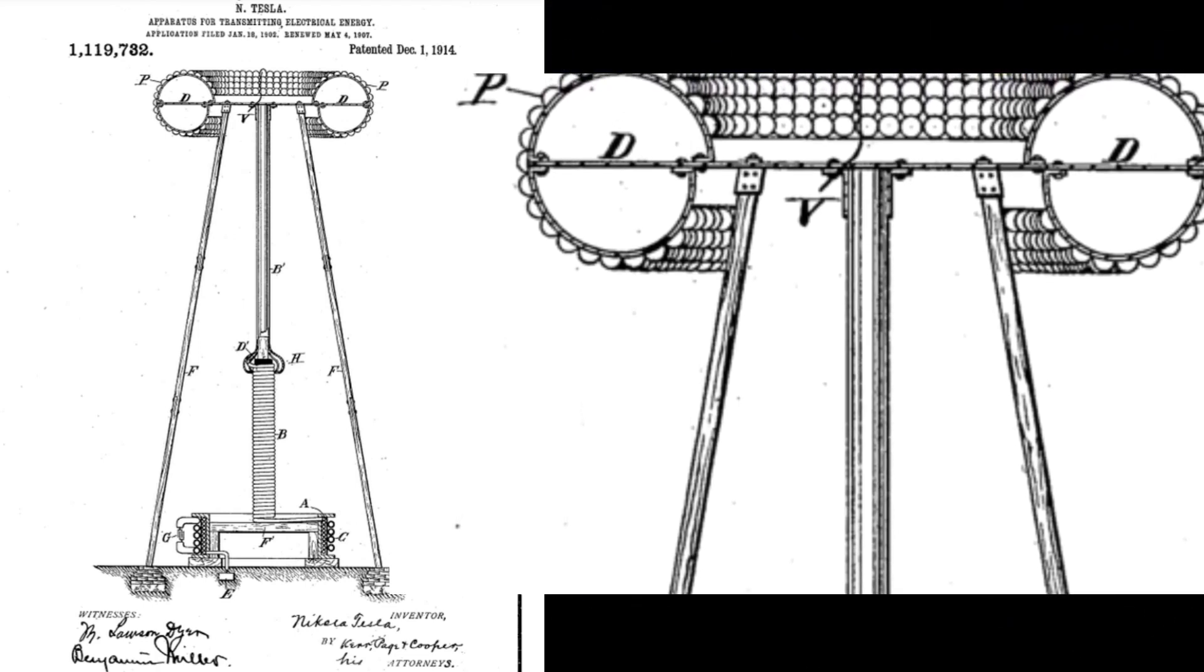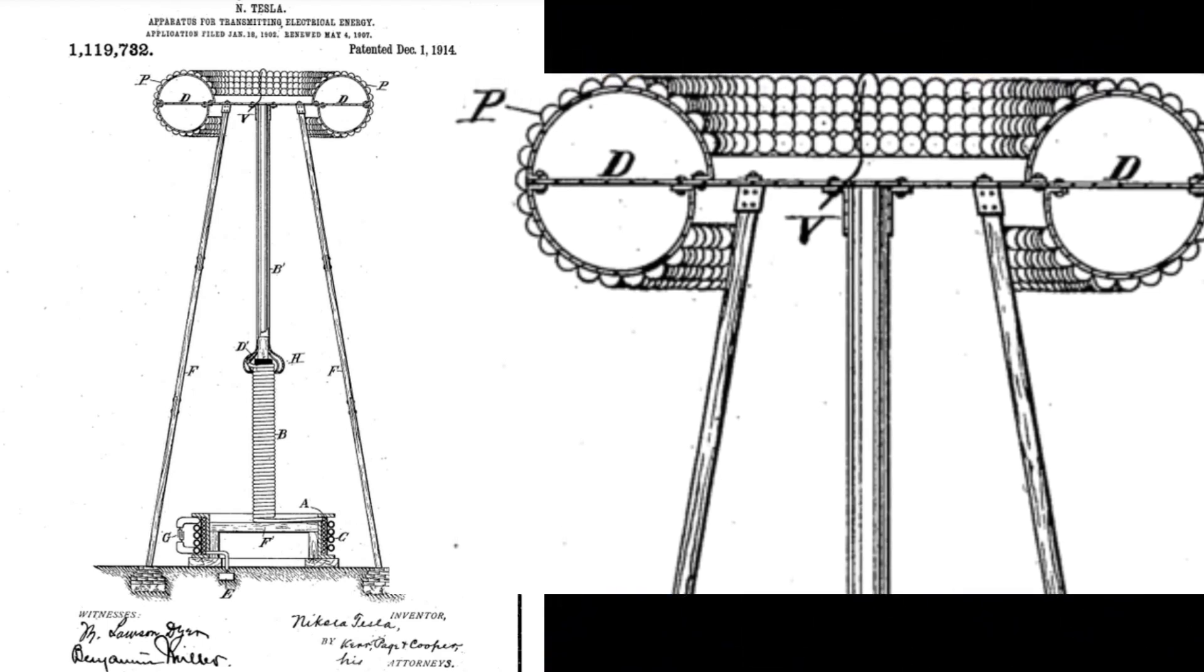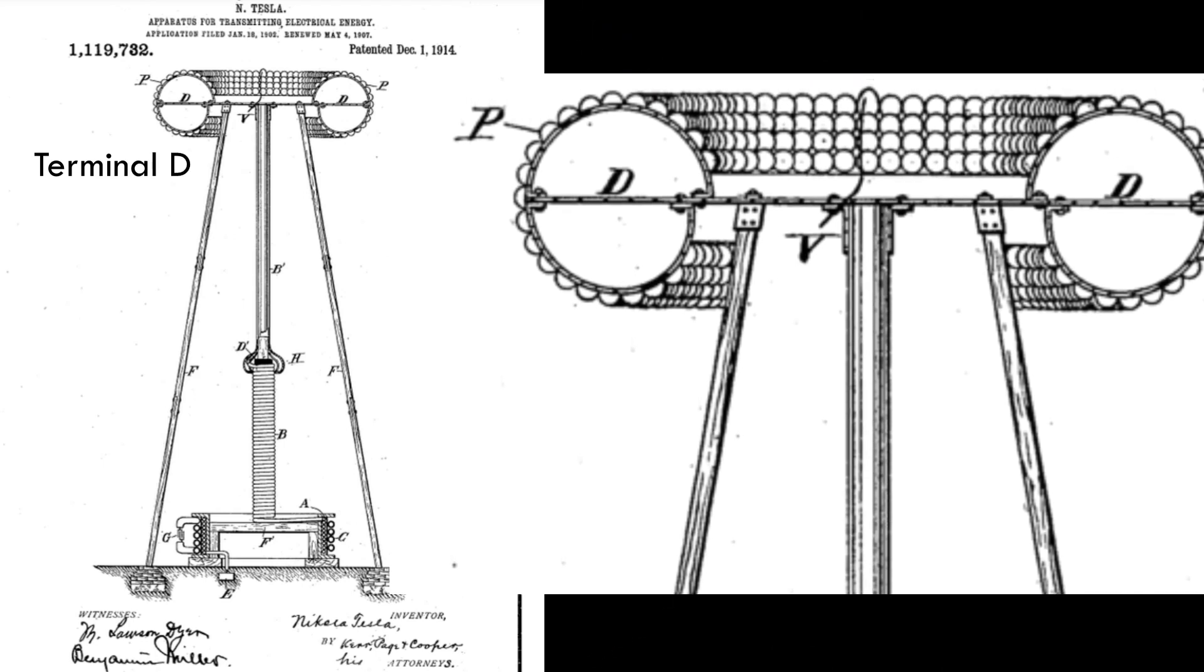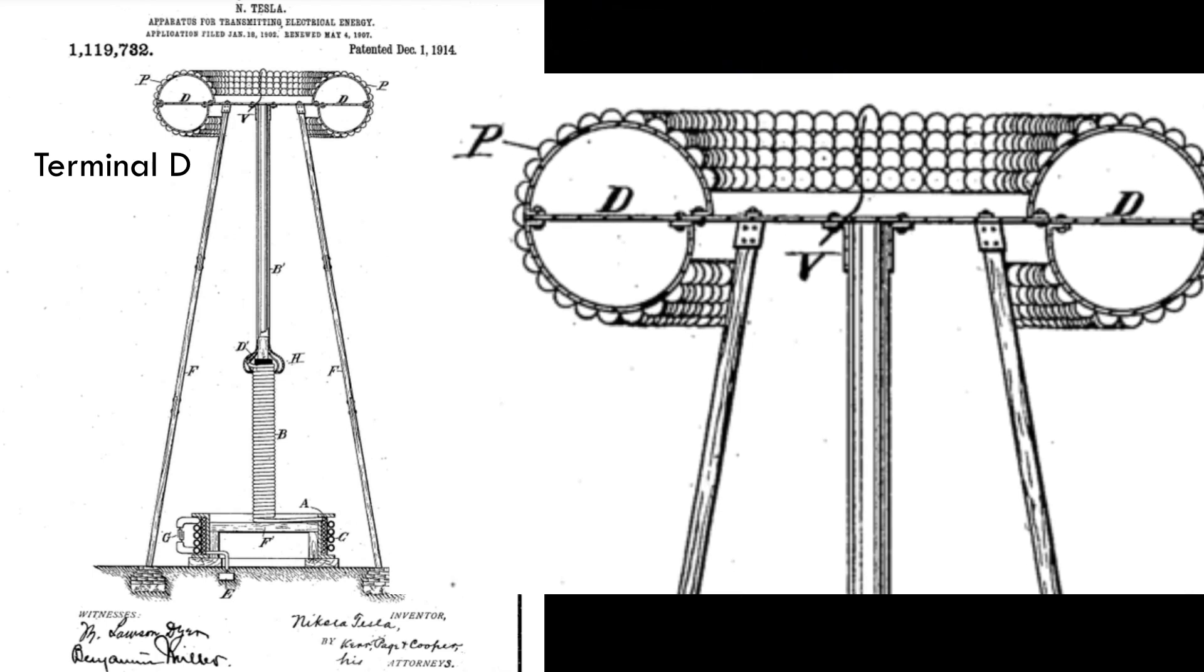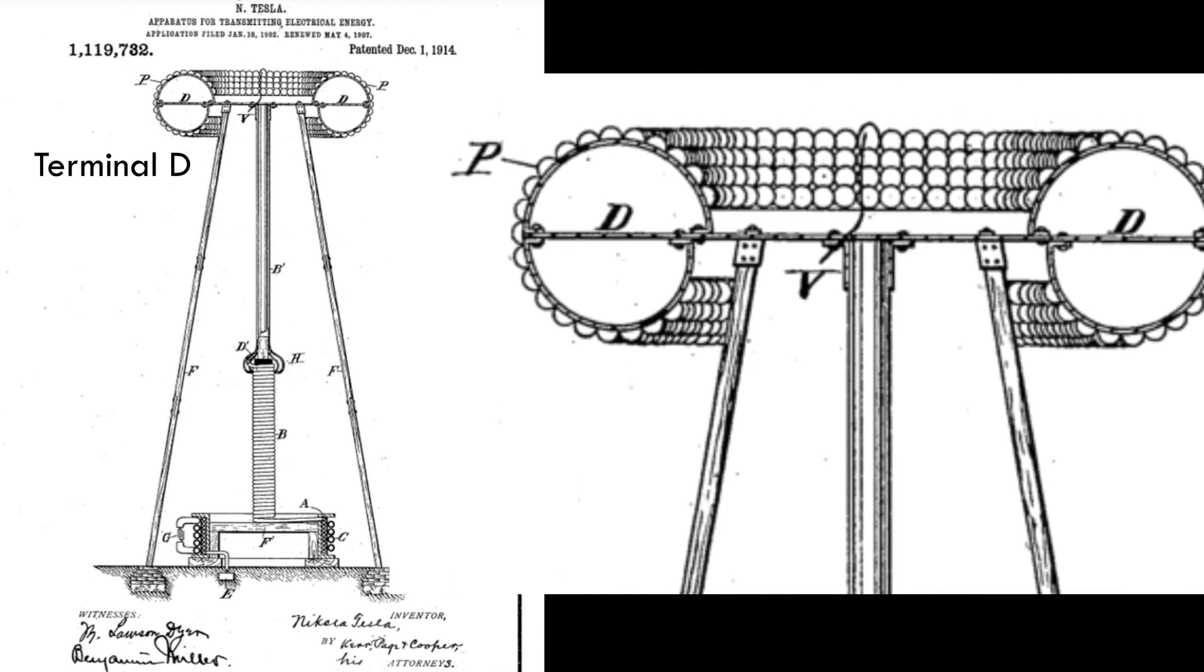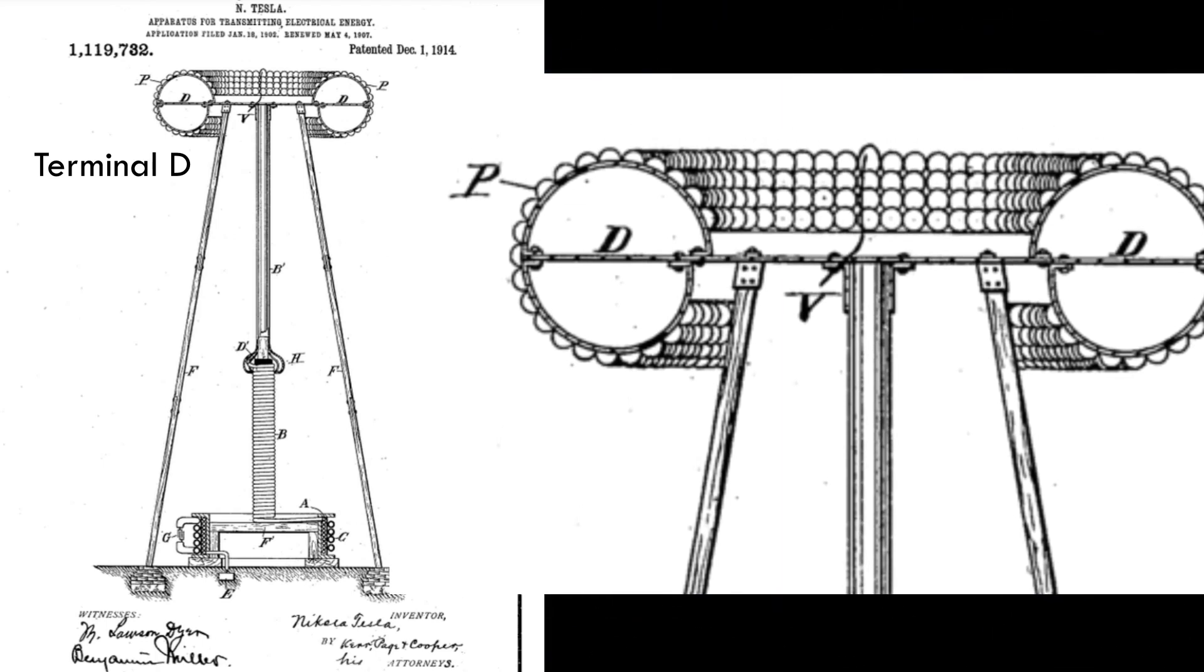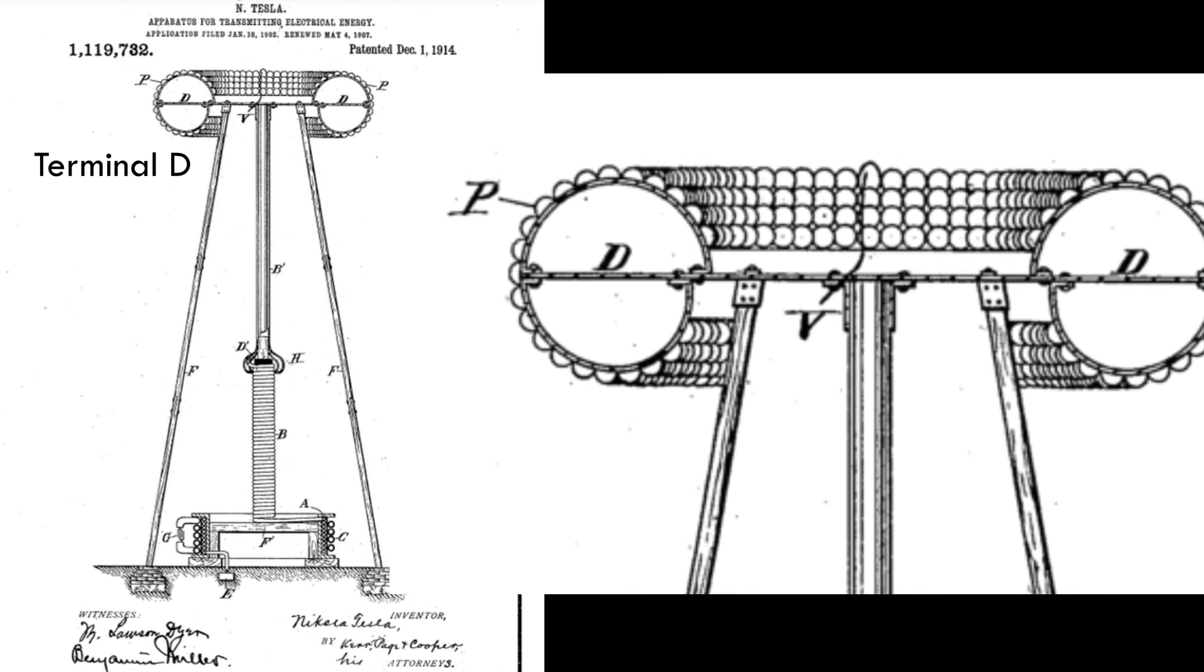Referring to the accompanying drawing, the figure is a view in elevation and part section of an improved free terminal and circuit of large surface with supporting structure and generating apparatus. The terminal D consists of a suitably shaped metallic frame, in this case a ring of nearly circular cross-section, which is covered with half-spherical metal plates, P-P, thus constituting a very large conducting surface, smooth on all places where the electric charge principally accumulates.